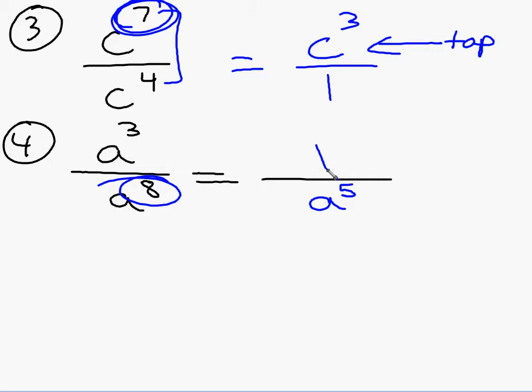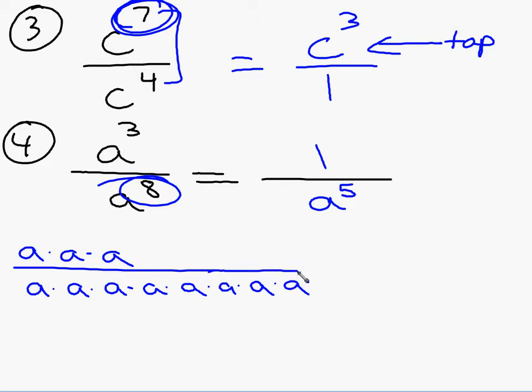Let me show you why that's the case. The top is a to the 3rd. The bottom is a to the 8th. I'm going to write it out so you can see it. We don't have to do this step, I'm just trying to help you understand. Remember we said we can slash these things. So look what I'm left with: an a to the 5th on the bottom and a 1 on the top. We could write that as a negative exponent, a to the negative 5th, but we're not going to do that today. Let's just write it as 1 over a to the 5th.